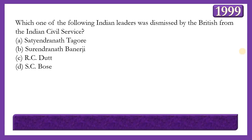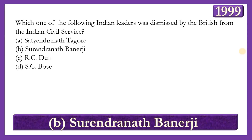Next question: Which one of the following Indian leaders was dismissed by the British from the Indian Civil Service? Options: Satyendranath Tagore, Surendranath Banerjee, R.C. Dutt, or S.C. Bose. The answer is option B — Surendranath Banerjee — who became the second Indian to succeed in the ICS competitive exams in 1869, but was dismissed in 1874 for a minor procedural error, and was discriminated against because he was Indian.